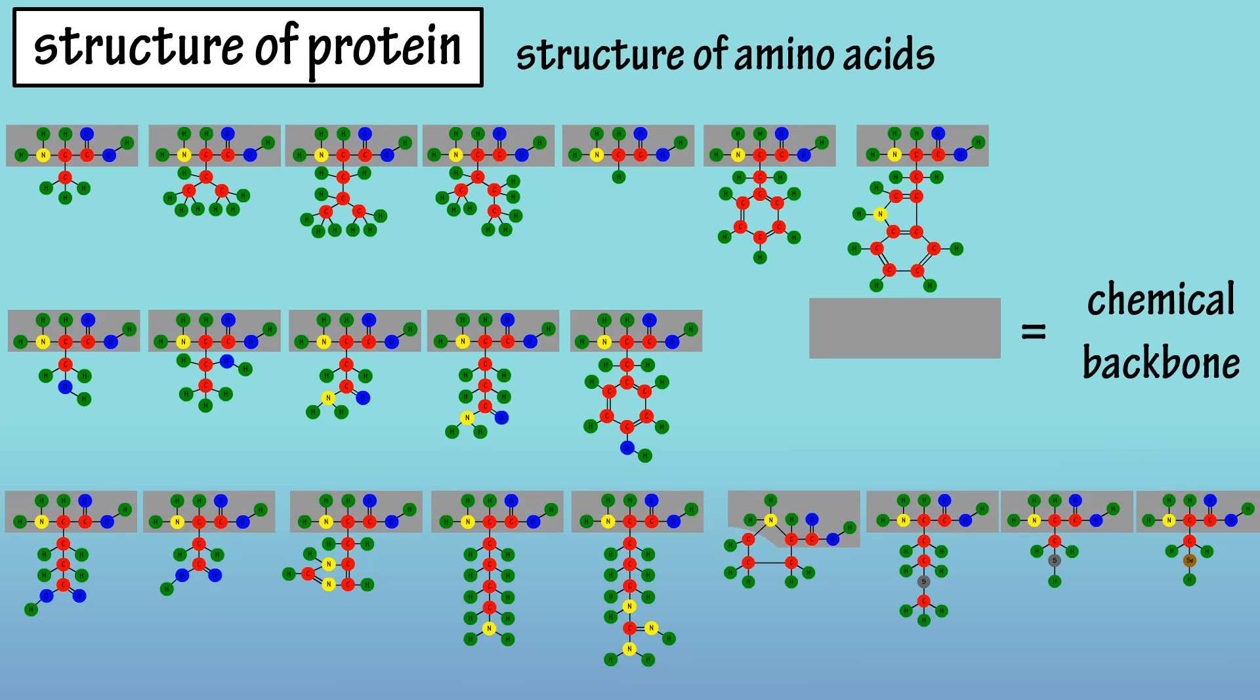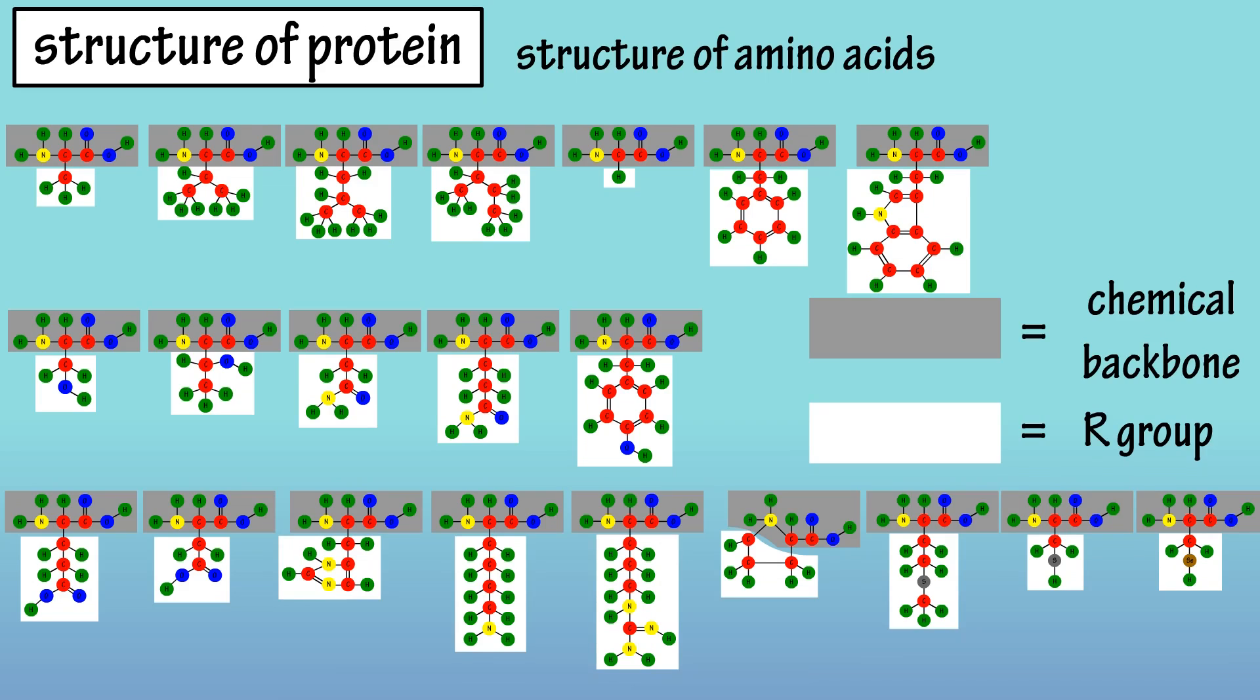As you can see, they all have the same chemical backbone, and the only difference is their unique functional R group. These functional R groups have chemical characteristics that allow amino acids to be organized into specific groups.